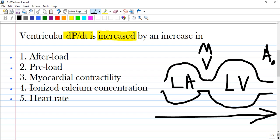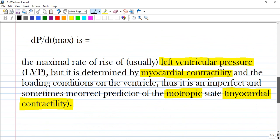So this dP/dt is myocardial contractility by definition. I found a definition that sounds this way: the maximal rate of rise of usually left ventricular pressure, but it is determined by myocardial contractility and the loading conditions on the ventricle. Thus, it is an imperfect, sometimes incorrect predictor of the inotropic state or myocardial contractility.